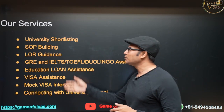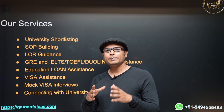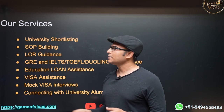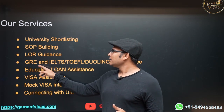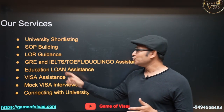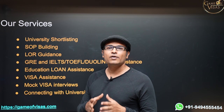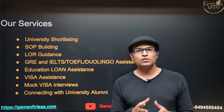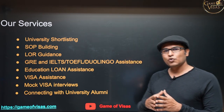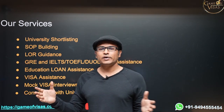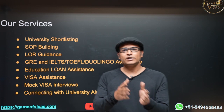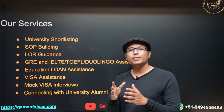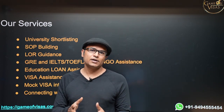These are the services provided: university shortlisting based on your profile, statement of purpose building, LOR guidance, GRE and English test assistance, and education loan assistance — no collateral required, so you can get an education loan without any security. Whether you apply for 10 lakh, 20 lakh, or 50 lakh universities, you can get a complete education loan and pay it off in one year after getting a job.